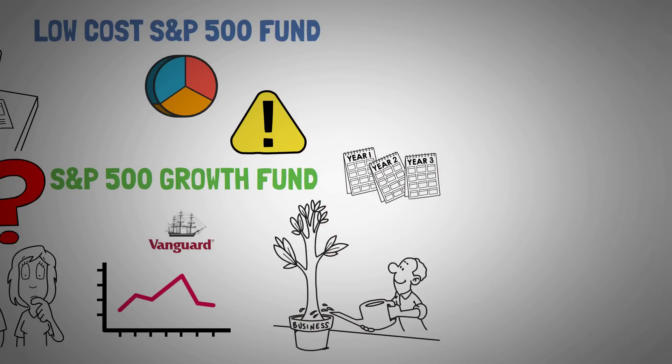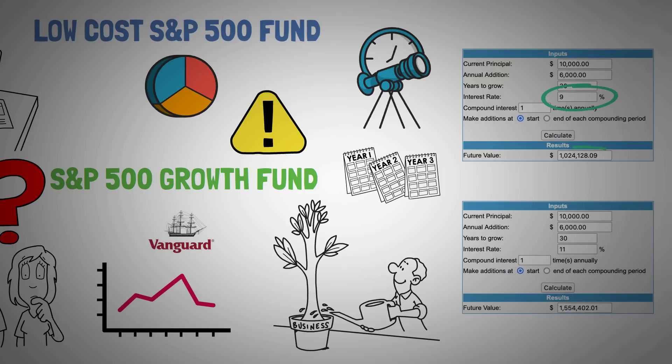Over a very long period of time, an aggressive growth fund will, in theory, provide better returns, which is ideal for those with a long time horizon. Just a 2% difference in your annual rate of return will make a big difference over time. However, you need to be prepared to stomach the volatility, and you should understand the trade-off of risk and reward.